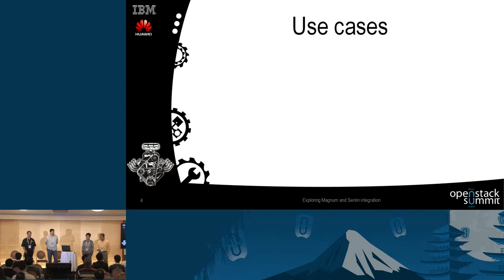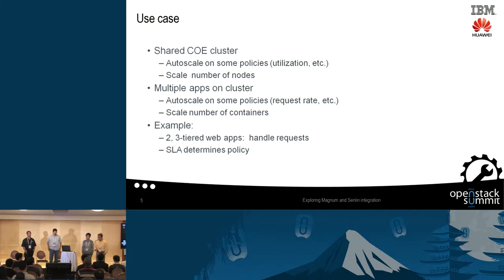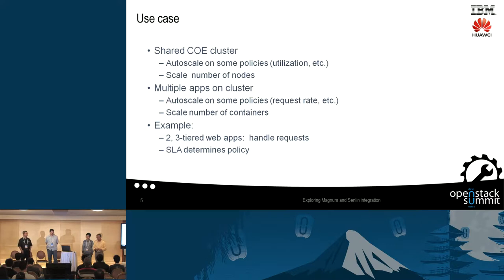So let's first look at the use case. We know that Magnum, a container service in OpenStack, will build a cluster for you. On that cluster you would typically run more than one application — it's a shared cluster. When we scale that cluster, we look at some kind of policy to trigger the scaling. Utilization is one easy way — we can look at CPU or memory utilization to drive scaling, and scale by adding or removing nodes from the cluster.